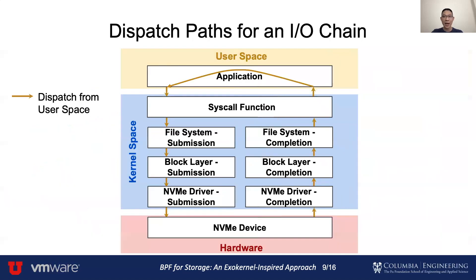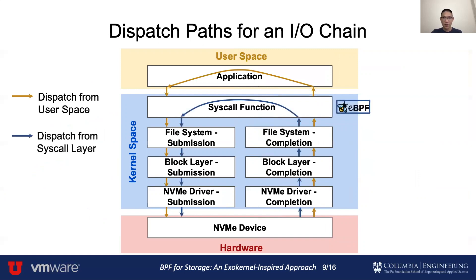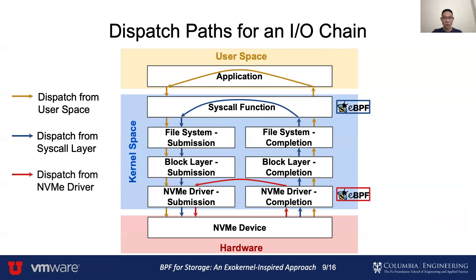This diagram shows the dispatch path of submitting IO requests from user space. To reduce the overhead of traversing the kernel storage stack, we can dispatch the next request within the syscall function. This approach only eliminates the kernel boundary crossing, but it allows us to keep all the file system and block layer functionalities. At the other extreme, we can resubmit the next request in the NVMe driver, which almost eliminates all of the software overhead. However, the NVMe driver lacks file system and block layer semantics.